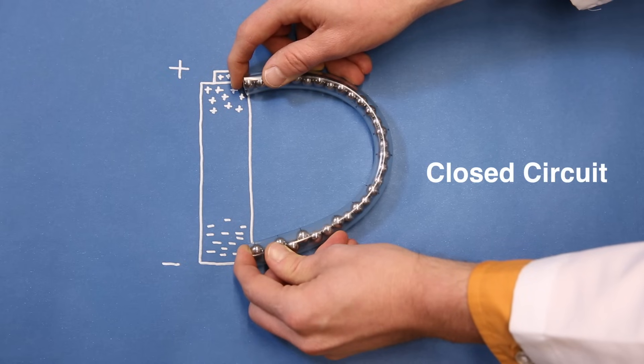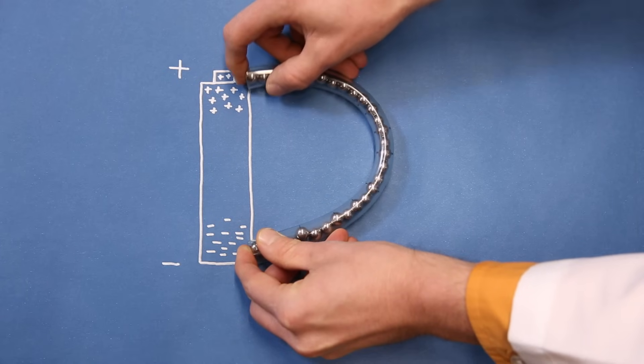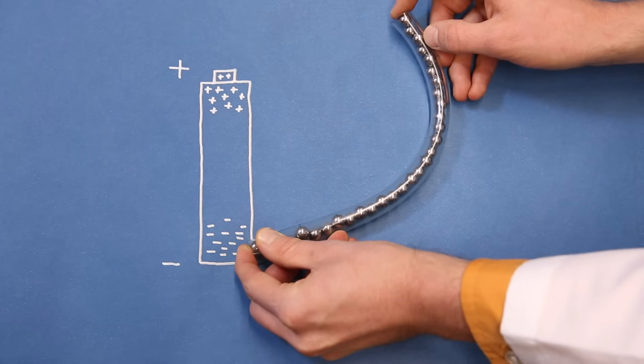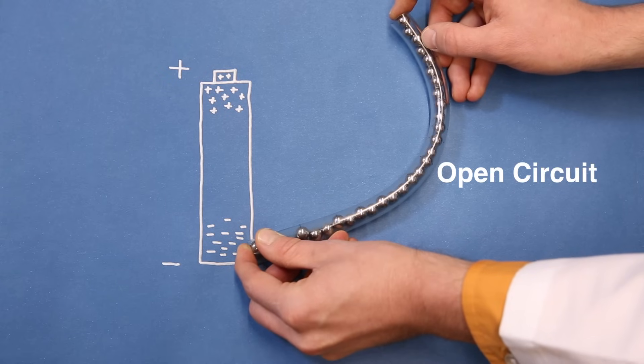This is known as a closed circuit, as it creates a loop from one side of the energy source to the other. If we break the wire or remove it from one of the terminals, then the electrons will stop flowing. This is known as an open circuit.